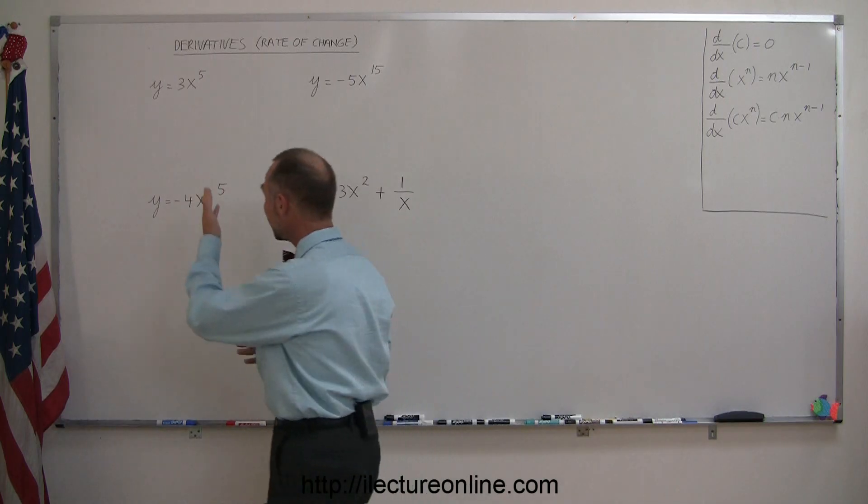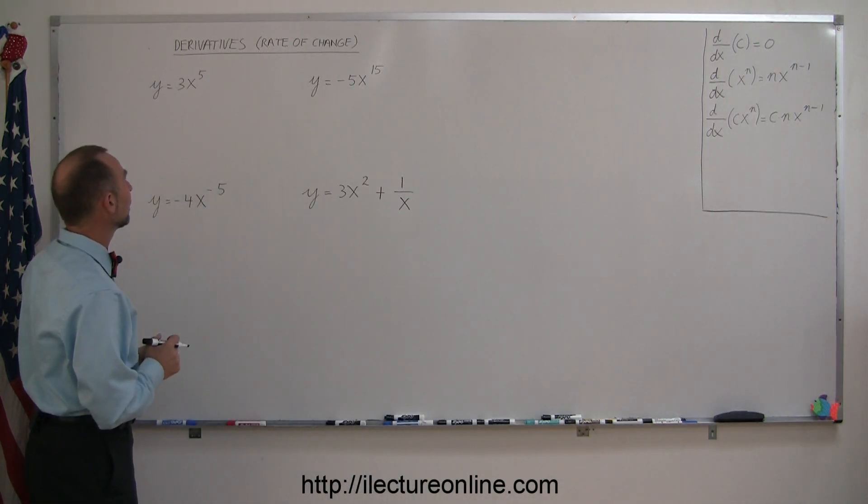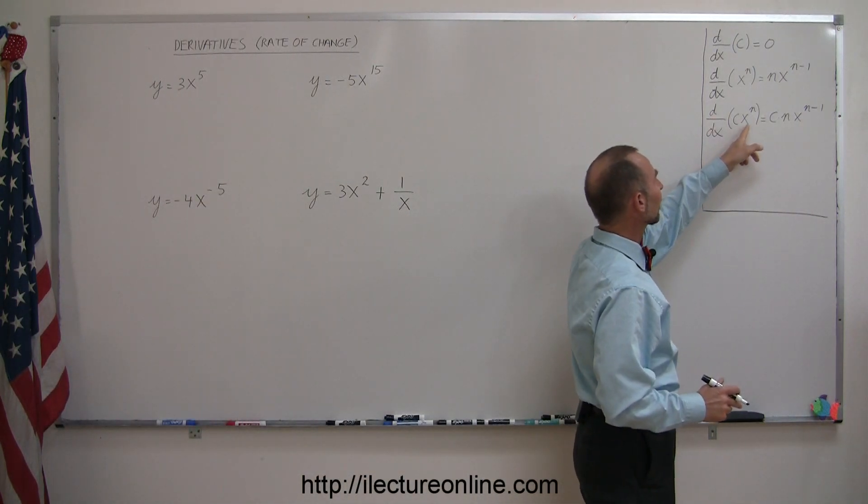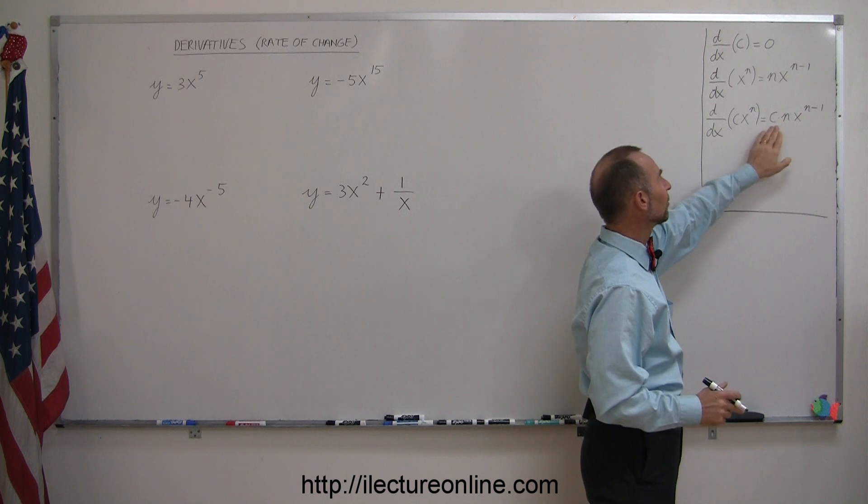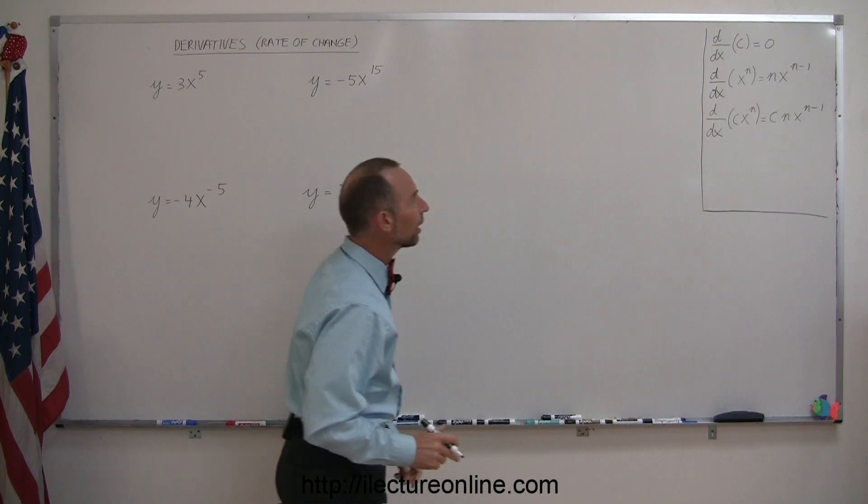All right, so looking at our first one here, we have y equals 3x to the fifth power. Looking over here, we know that when we have a constant in front of x to the n power, we just simply leave the constant there and take the derivative of x to the n, which we can show you there.